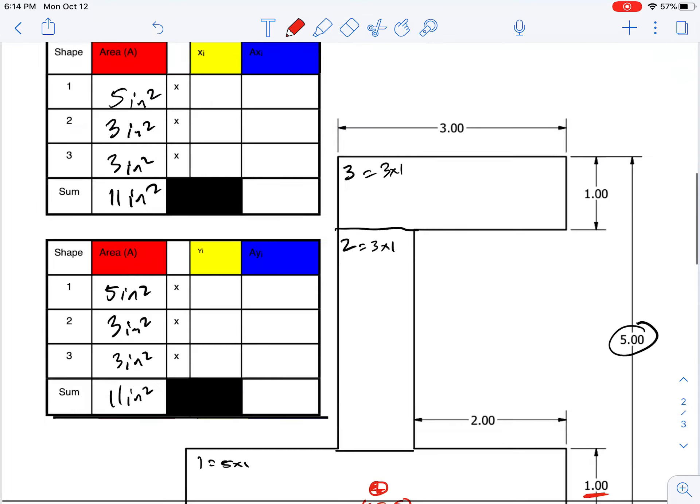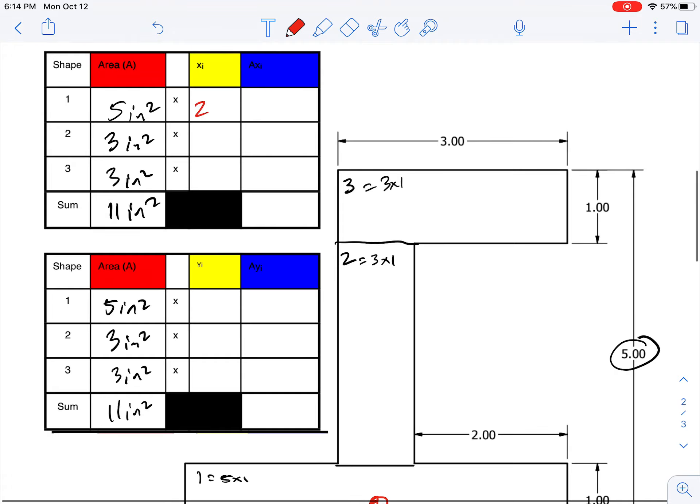So we can put that in here. Our x location is 2.5 and 0.5 is our y location. When we multiply 5 by 2.5, we get 12.5 as our weighted area, and then 5 by 0.5 is 2.5 as our weighted area.